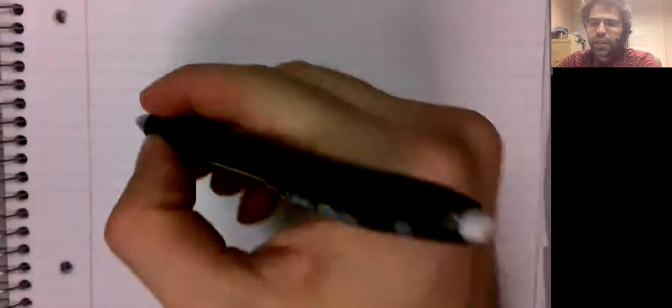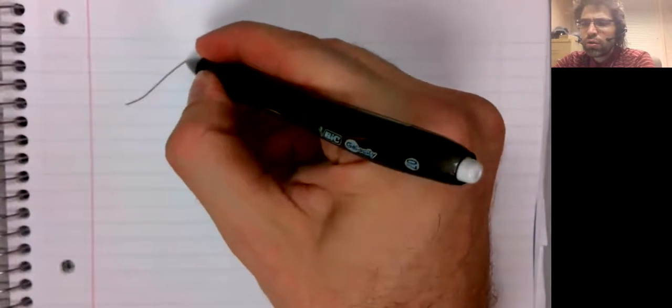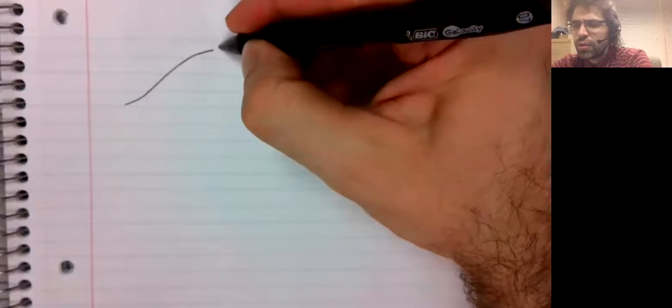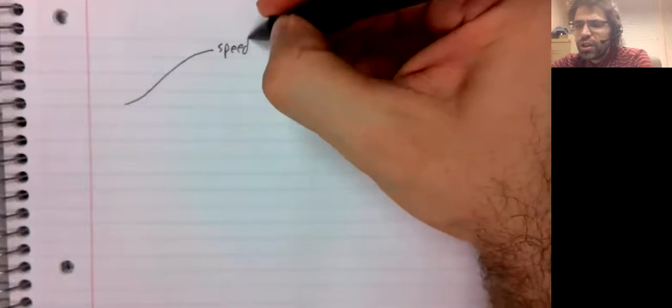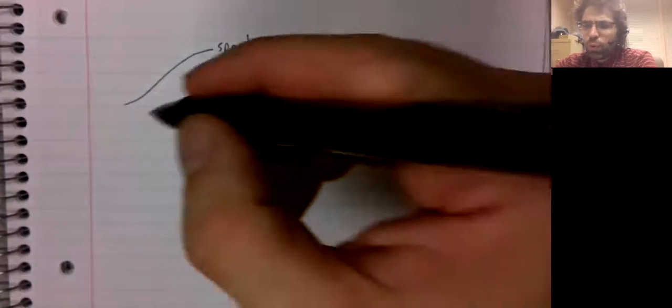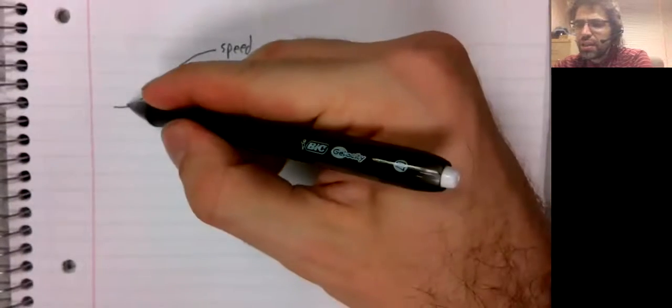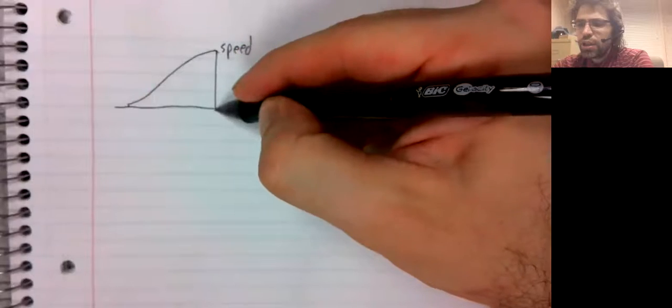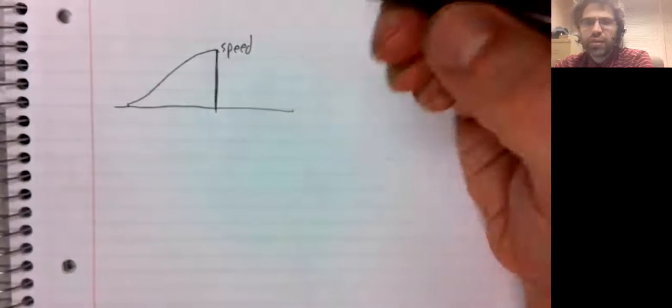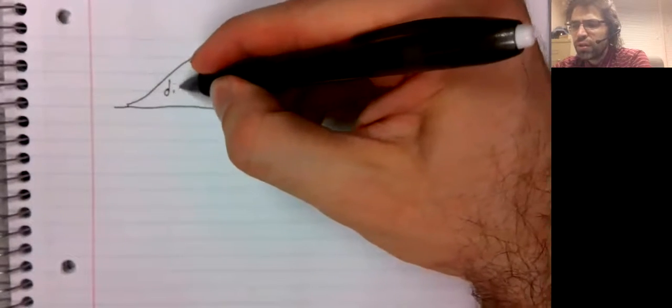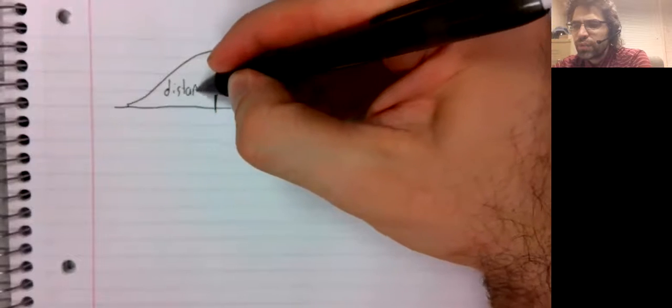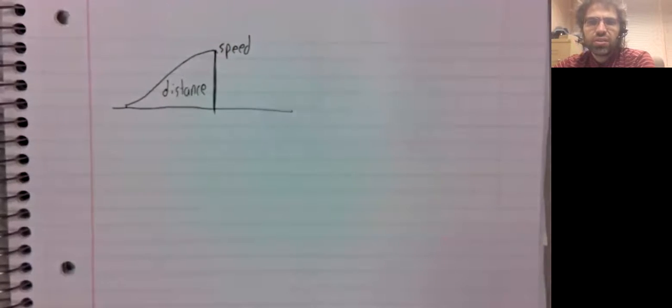When we wanted to motivate finding an area under a curve, the example we used was speed. The area under a speed curve is the distance the object travels.